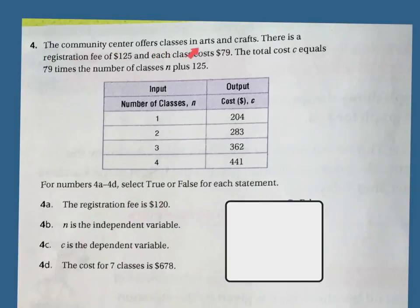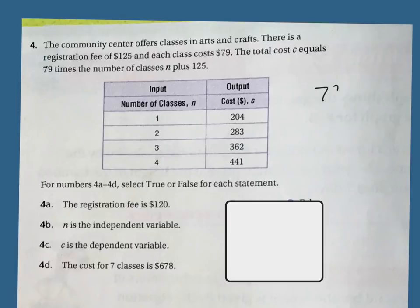The community center offers classes in arts and crafts. There is a registration fee of $125, and each class costs $79. The total cost C equals 79 times the number of classes, N, plus 125. So it's $79 per class times N, plus the registration fee of $125.